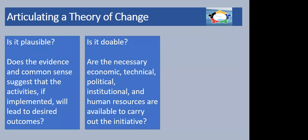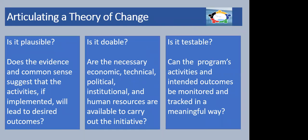Do you have sufficient youth workers? Are they suitably trained to deliver the interventions that will bring about the outcome? When we're thinking about resources, we're thinking very widely. Some of these we can quantify; some we might have to apply a proxy measure to. And then finally, the third question is: is it testable? Can the programme's activities and intended outcomes be monitored and tracked in a meaningful way? Do we have the data to measure the inputs, the types of activities we're delivering, the numbers of young people, and the outcomes?